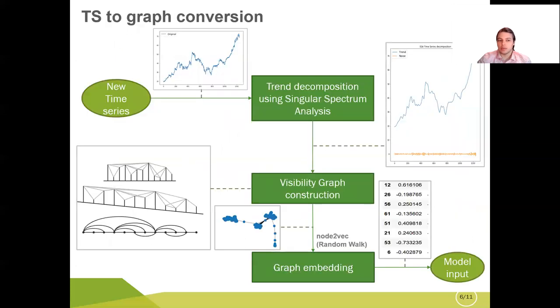Speaking about the third part time series to graph conversion there are three steps in this conversion. The first one is decomposing the time series into trend and noise using singular spectrum analysis. The next step is constructing a graph using visibility graph approach.